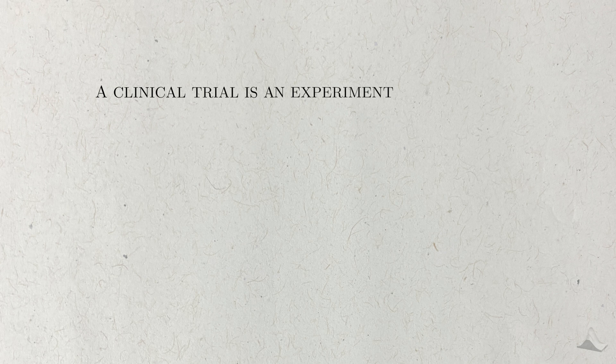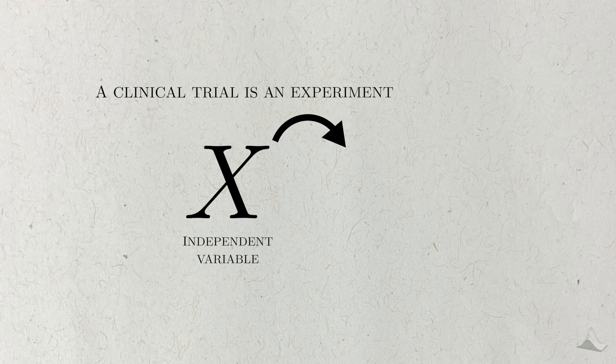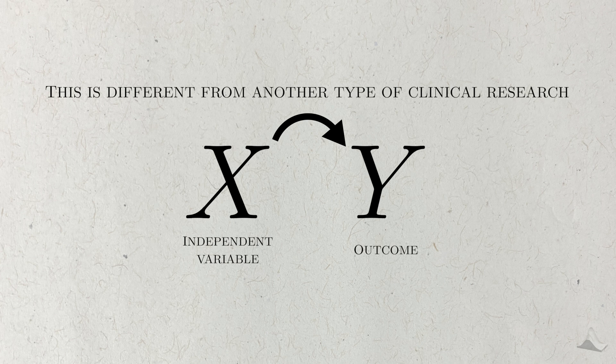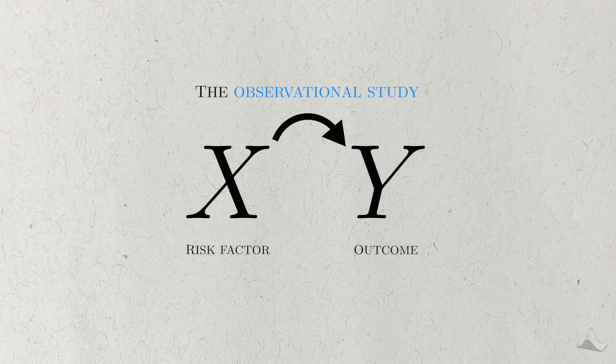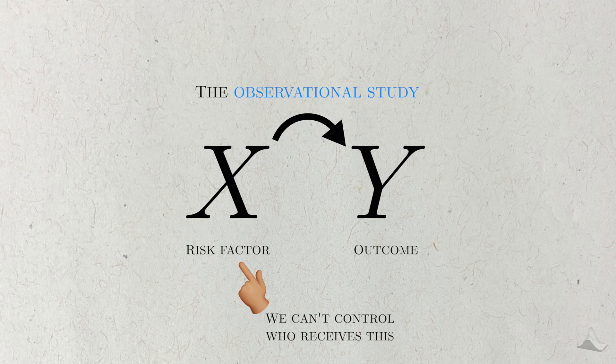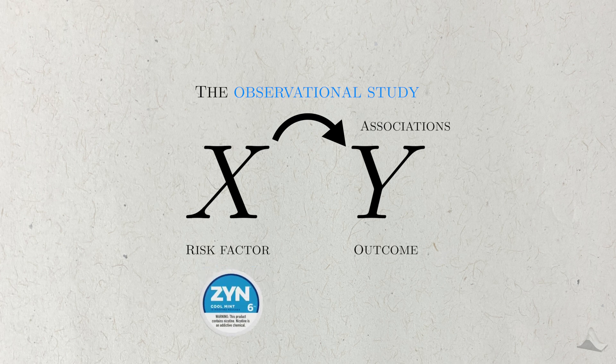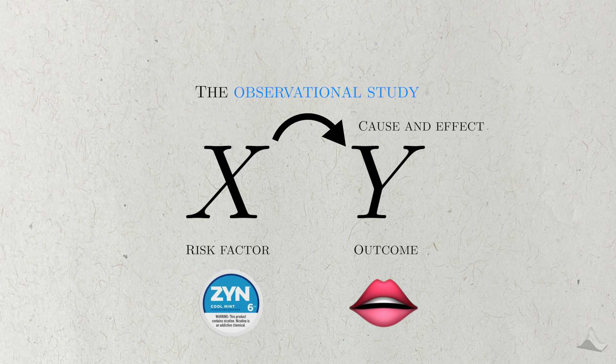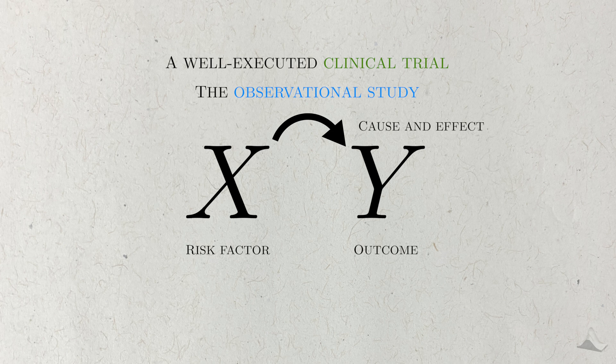By nature, clinical trials are experiments. This means that we control some independent variable, such as whether or not someone receives a treatment, to see how it affects some outcome of interest. This control makes clinical trials different from another type of clinical research, observational studies, where we can't control the independent variable. We simply observe data and look for significant associations in the data. For example, an observational study might find that taking ZIN is associated with higher rates of mouth disease, but it can't say that this association is the same as a cause and effect relationship. Only a well-executed clinical trial can do that.